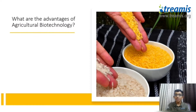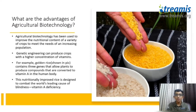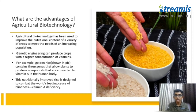What are the advantages of agricultural biotechnology? Agricultural biotechnology has been used to improve the nutritional content of a variety of crops to meet the needs of the world's increasing population. Genetic engineering can produce crops with a higher concentration of vitamins. Golden rice, shown in the picture, allows plants to produce compounds that are converted into vitamin A in the body. This nutritionally improved rice helps combat the world's leading cause of blindness — vitamin A deficiency.